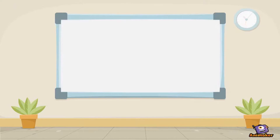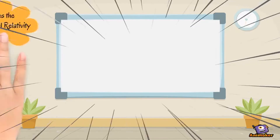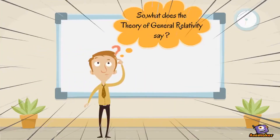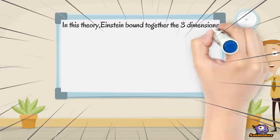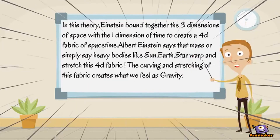So what does the theory of general relativity say? In this theory, Einstein bounds together the three dimensions of space with one dimension of time to create a 4D fabric of spacetime. Albert Einstein says that mass — heavy bodies like the sun, earth, and stars — warp and stretch this 4D fabric. This curving and stretching of the fabric creates what we feel as gravity.